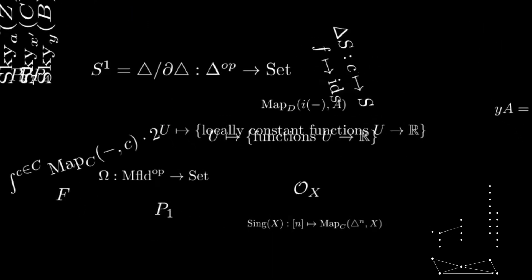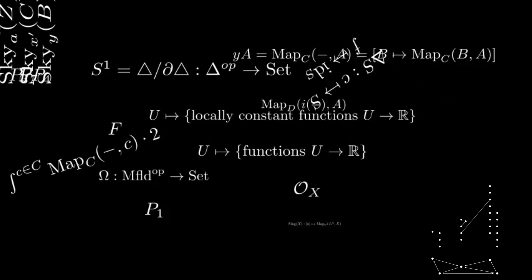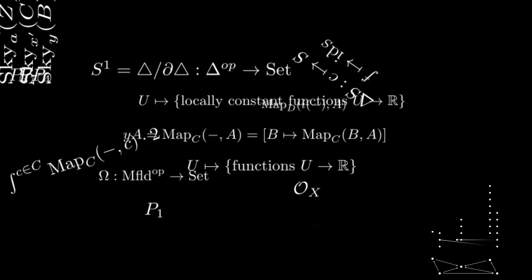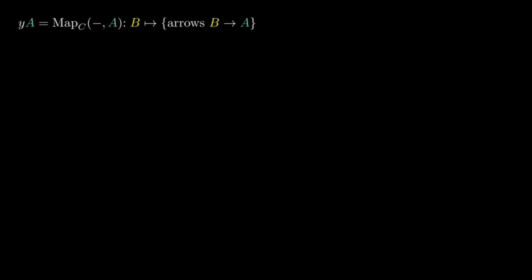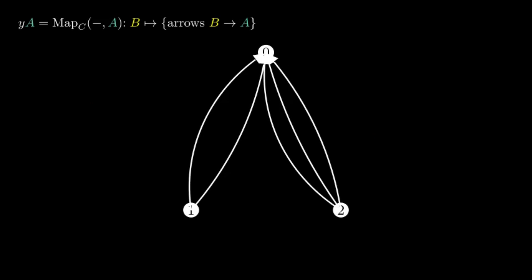Among all pre-sheaves, there is one special, in some sense the simplest, a representable. The representable on A assigns to every object a set of arrows that go from it to A. Let's say we have two maps from object 1 to object 0 and 3 from 2 to 0, and we regard the representable on 0.